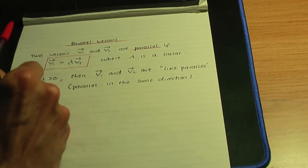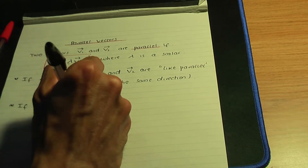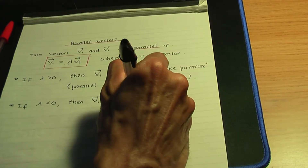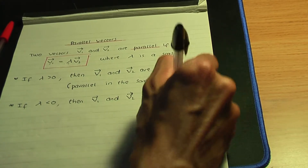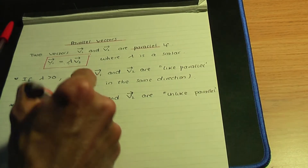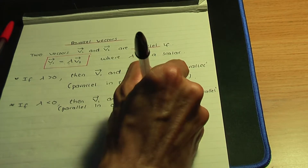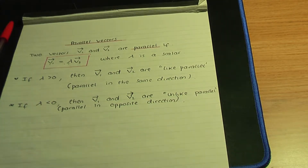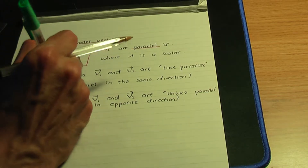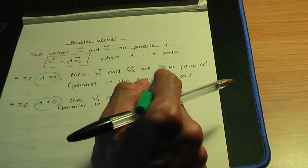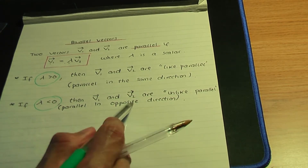And if lambda is less than 0, so if lambda is negative, then v1 and v2 are unlike parallel. Lambda is less than 0, they're unlike parallel, and unlike parallel means they're parallel in opposite directions. So remember: lambda greater than 0, your vectors are like parallel; lambda less than 0, your vectors v1 and v2 are unlike parallel. Like parallel means parallel in the same direction; unlike parallel means parallel in opposite directions.